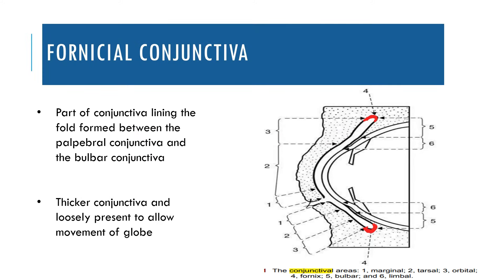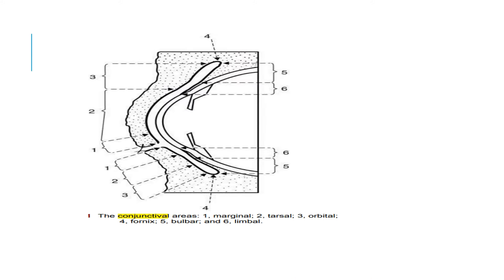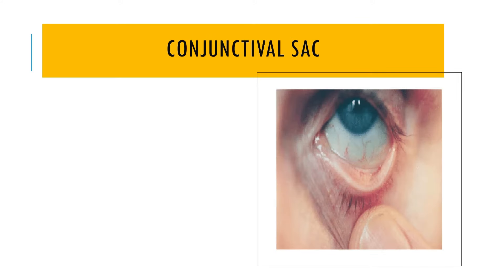The fornicial conjunctiva covers the fornices and is considered a junction between the palpebral conjunctiva and the bulbar conjunctiva — from the fornix, the conjunctiva begins covering the eyeball. The fornicial conjunctiva is much thicker compared to the tarsal conjunctiva and is more loosely present to allow for greater movement of the globe. There is a pocket-like or sack-like structure formed by the conjunctiva between the lids and the eyeball, which is called the conjunctival sac.